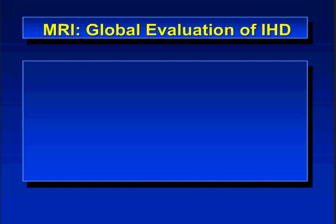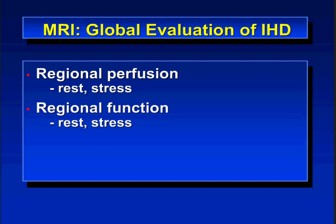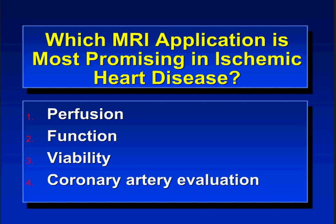MR can be used for global evaluation of ischemic heart disease, though some applications are better established than others. These include regional perfusion with stress perfusion imaging, regional functional evaluation at rest or stress, evaluation of myocardial viability, and coronary MRA. When asked which MR application is most promising, over 60% responded viability, and I agree. In our practice, most cases for ischemic heart disease are referred for evaluation of viability.